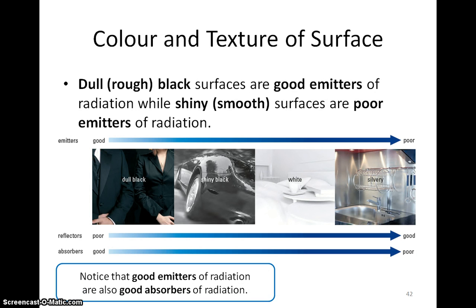Colour and texture of the surface. Dull black surfaces are good emitters of radiation, while shiny surfaces are poor emitters of radiation. A surface is dull because it is rough, while a surface is shiny because it is smooth. Note that black surfaces are better emitters of radiation than white surfaces.